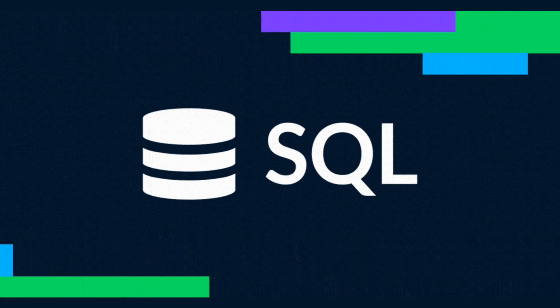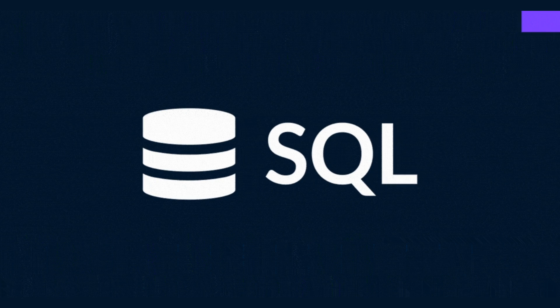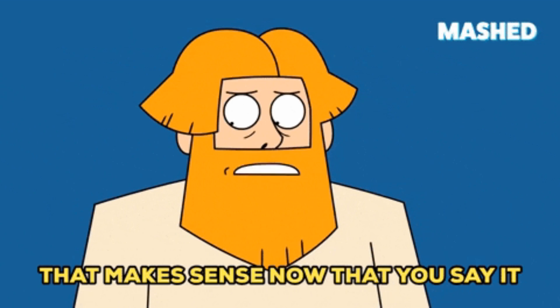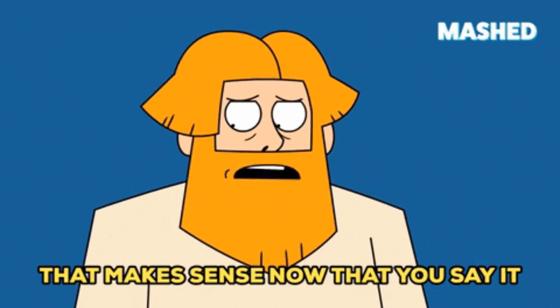Why can't you use a regular database? Traditional databases are great, but they're not optimized for searching, filtering, or ranking based on complex high-dimensional relationships. For example, suppose you wanted to find all songs in your music database that have a similar vibe to the song that's playing right now. This is where vector databases come in.